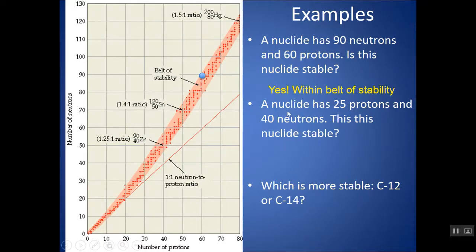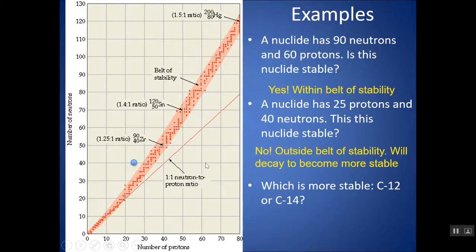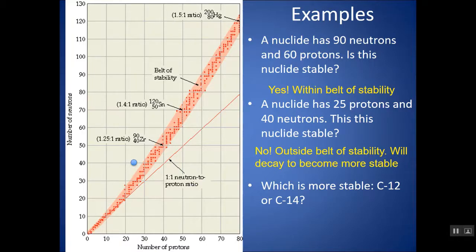A nuclide — meaning something that has a nucleus — with 25 protons and 40 neutrons: plotting 25 protons and 40 neutrons, we find the point falls outside the belt of stability, so it is not stable. We call that a radioisotope — it would be radioactive and would start to decay, emitting radiation in order to make its way into the belt of stability. It will undergo different nuclear reactions until it can turn into a more stable isotope.